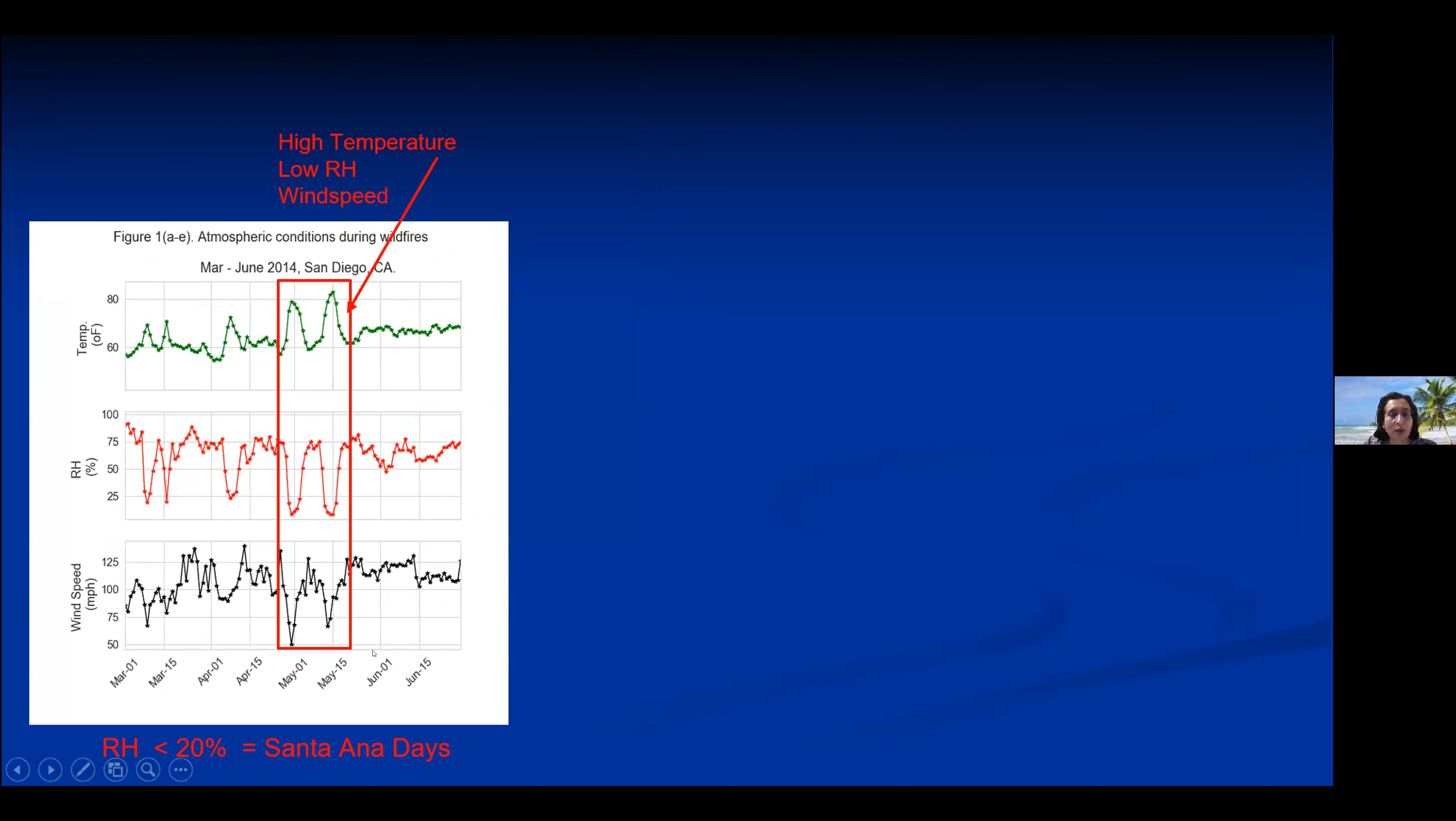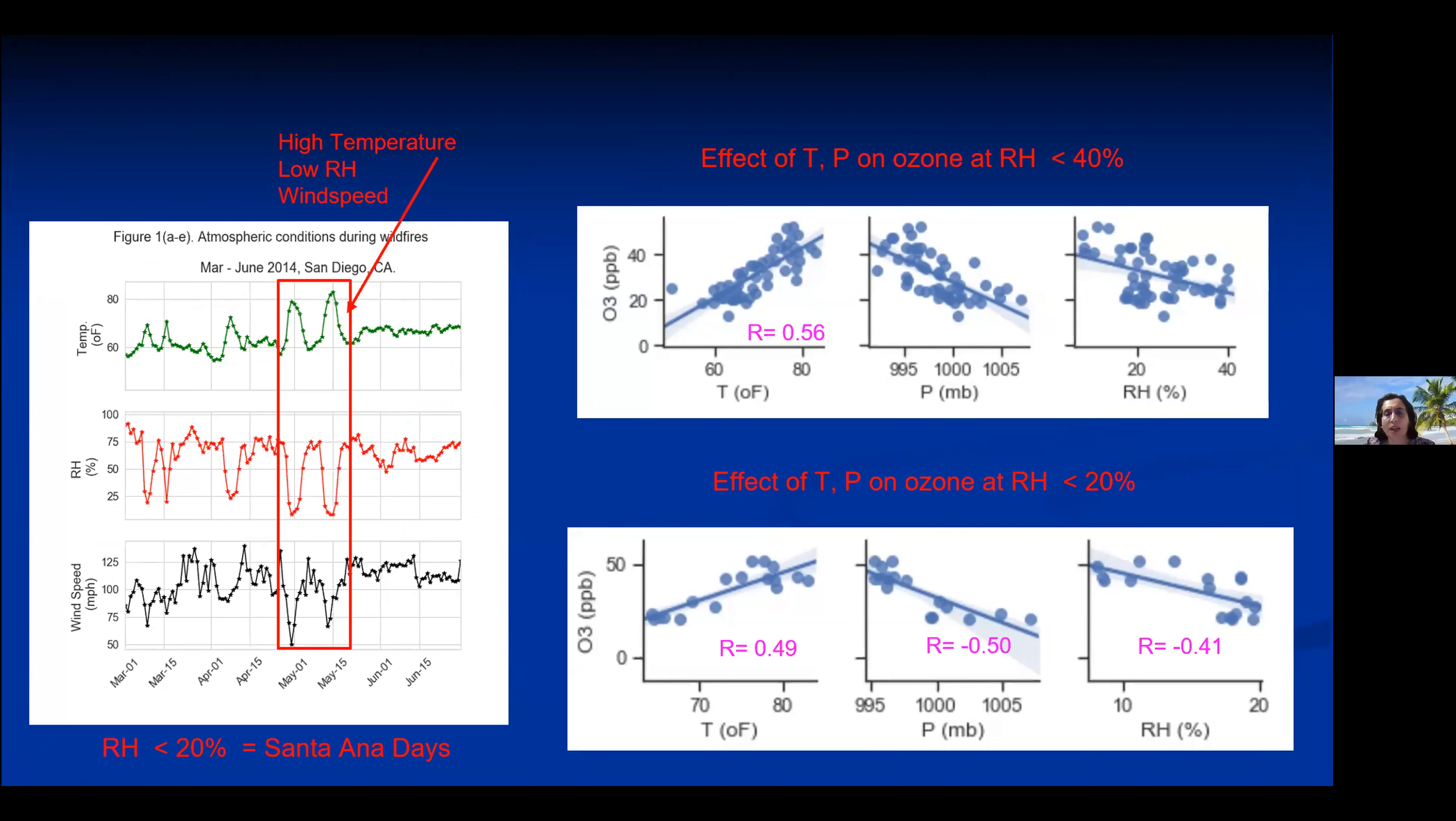And here as you can see during Santa Ana events the temperature is really high and relative humidity reaches below 20 percent as it's like bone dry. And also the winds are changing from very stagnant winds to 50 to 125 miles per hour and that caused all the embers to fly away and cause much more damage.